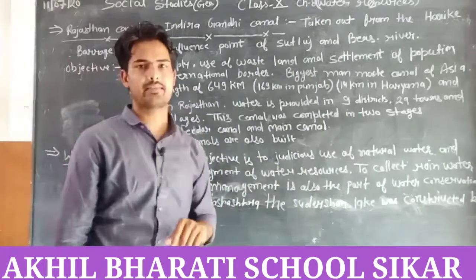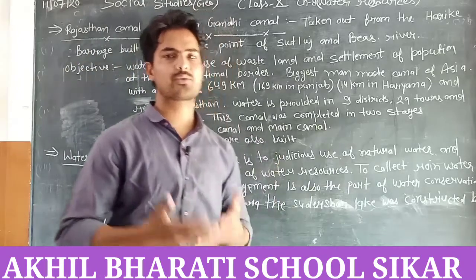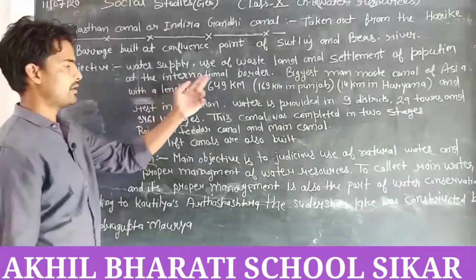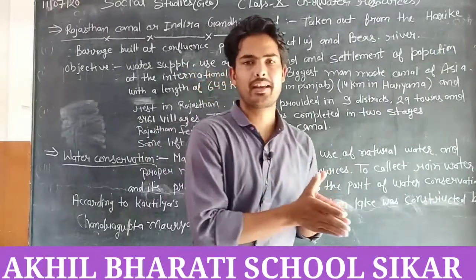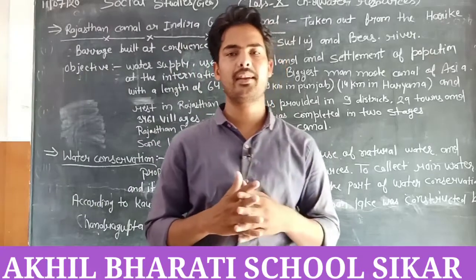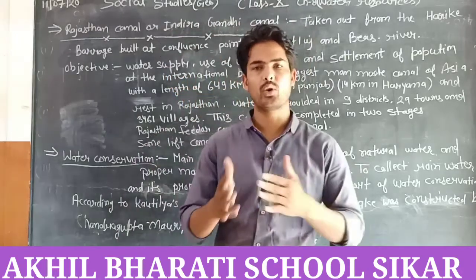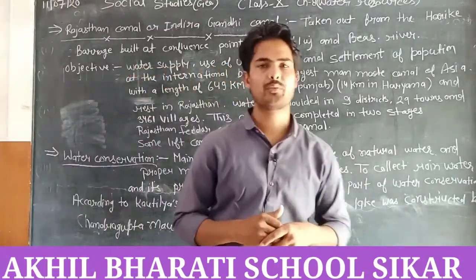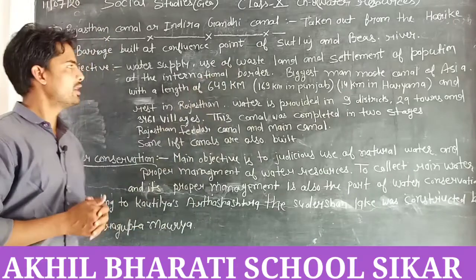The first objective is water supply. The second is the use of wasteland – land that is not useful for anything – to irrigate it using the canal's water. Additionally, the objective is the settlement of population at the international border. The western part of India, near the India-Pakistan border, has very low population because there is no rainfall and no water supply. Through this project, water will be provided there, irrigation will happen, and people will begin to settle there.